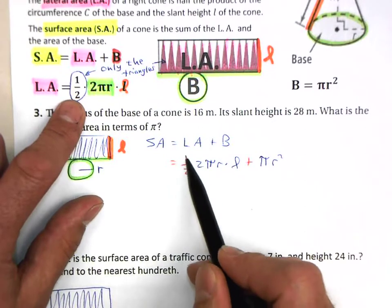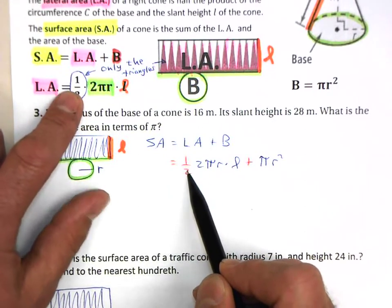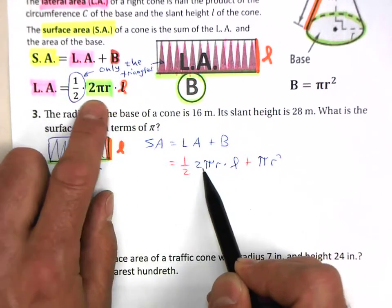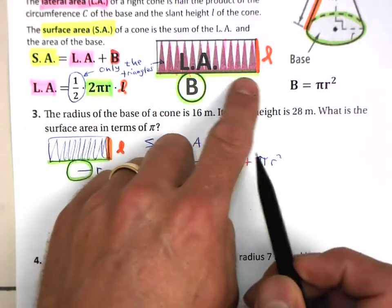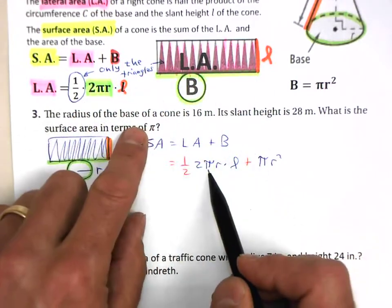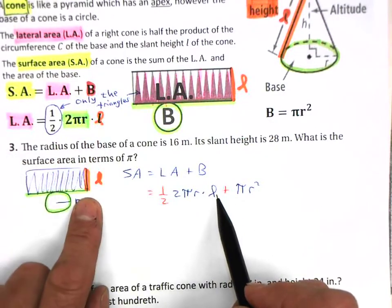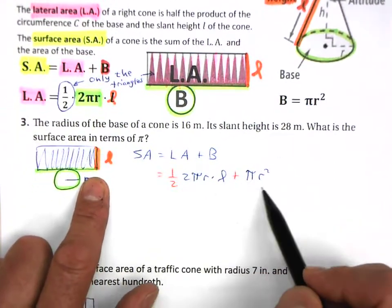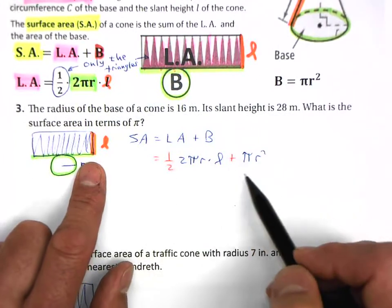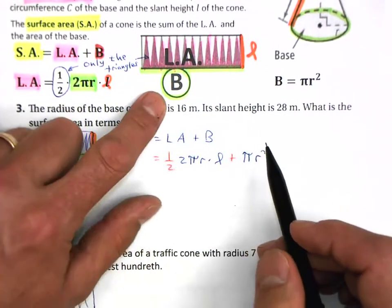But make sure you understand this formula and where we're getting this from. So we want one half, only the triangles. This is the circumference around the circle, which is the length of your rectangle. And then times the height of the rectangle, which is your slant height. And then this is the area of the big base, because the big base is the shape of a circle.